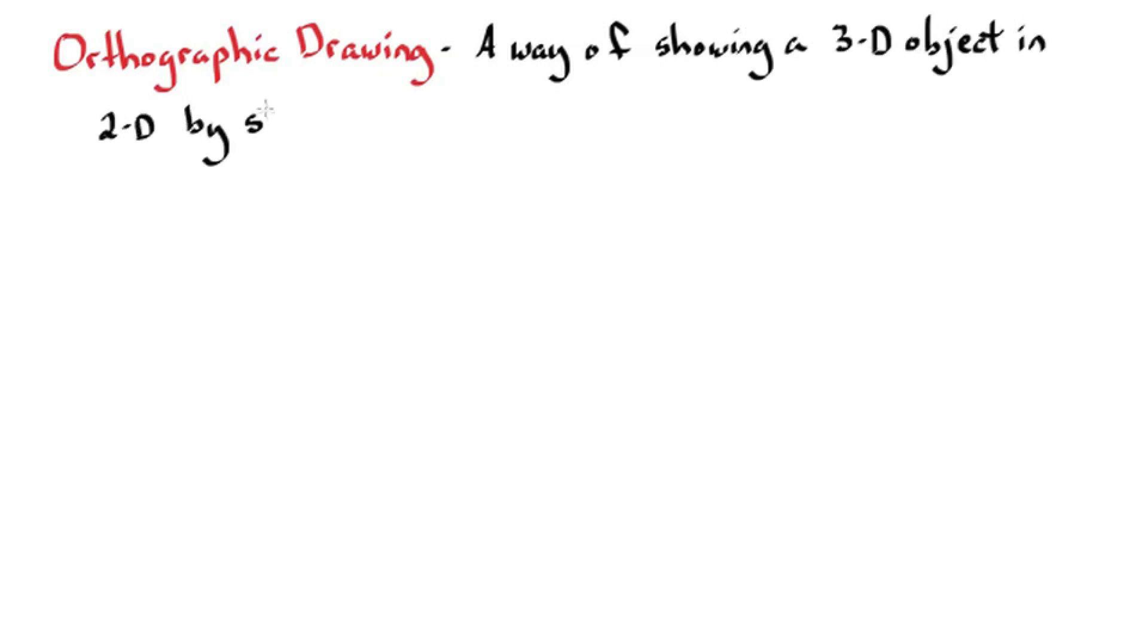Okay, so let's take a look at orthographic drawings. An orthographic drawing is a way of showing a three-dimensional object in two dimensions by showing a front, top, and right side view of the object.